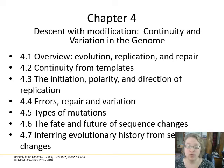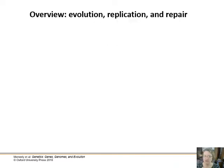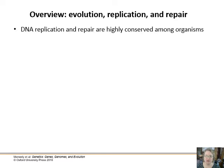Welcome to chapter four where we're going to talk about DNA replication, continuity, and mutations — variation within the genome. DNA replication and repair are processes carried out in the cell by enzymes coded for by DNA, and these processes — and therefore the proteins and the genes — are highly conserved among organisms.